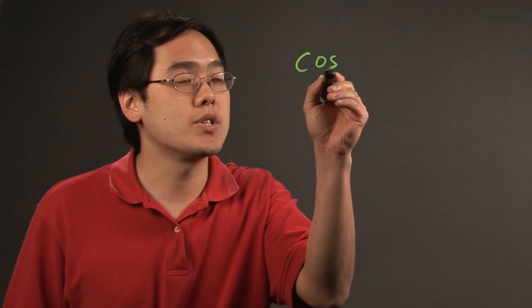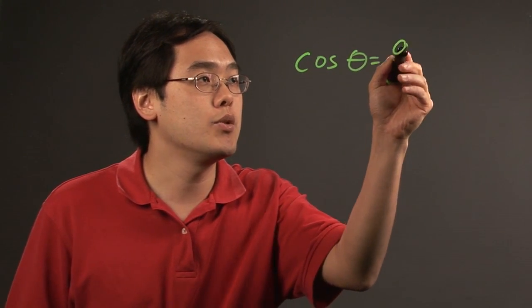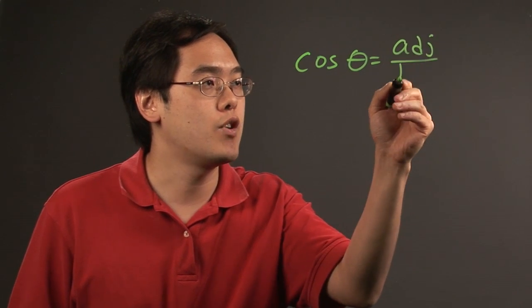Now, the important thing here is since you're talking about a right triangle context, you want to use this particular formula. Cosine theta is equal to the adjacent leg over the hypotenuse.